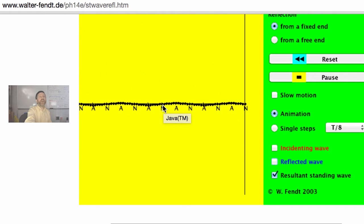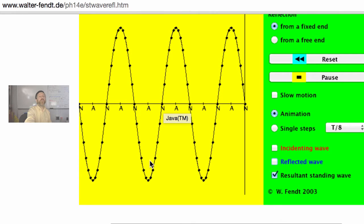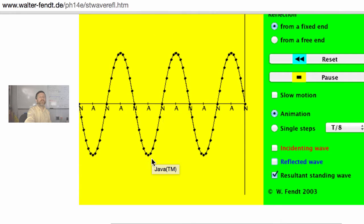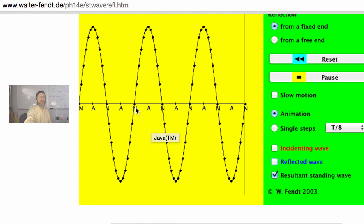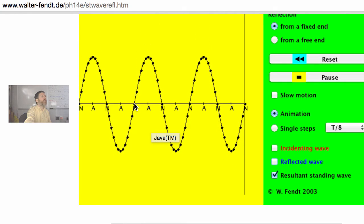So at the anti-nodes we're always having what kind of interference? Constructive. At the node, 100% of the time we're having what kind of interference? Destructive interference.